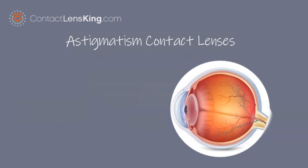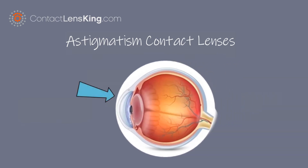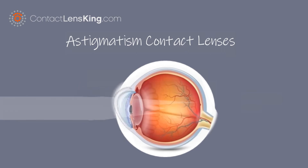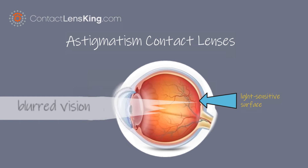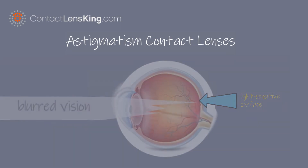This refractive error occurs when the cornea or the lens inside the eye is curved differently in one direction. This prevents light from focusing properly on the retina, the light-sensitive surface at the back of the eye, resulting in blurred vision.